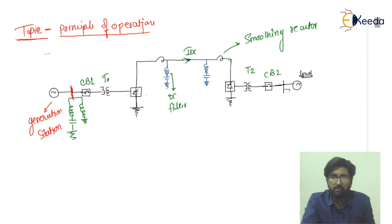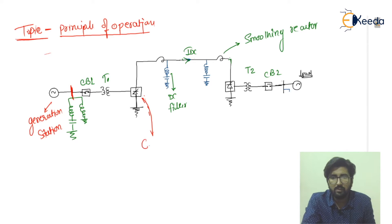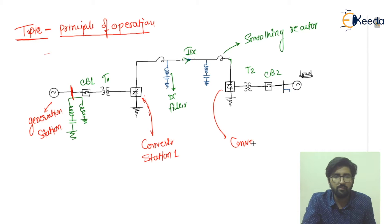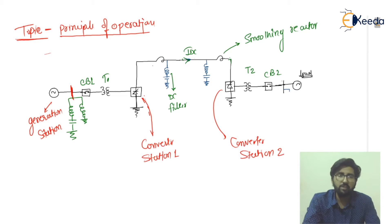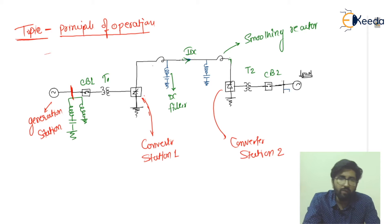This is converter station number one and this is converter station number two. This is the basic fundamental diagram. Now let's discuss the principle of operation.